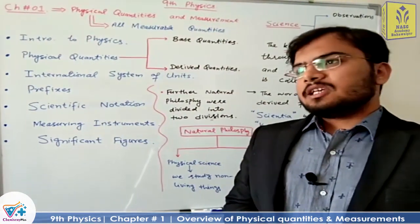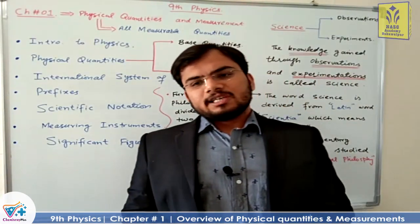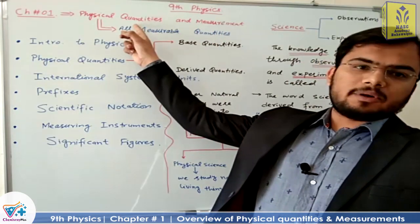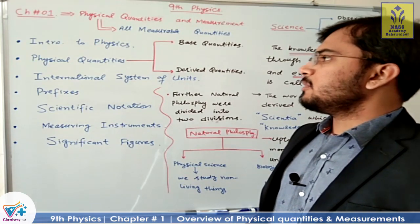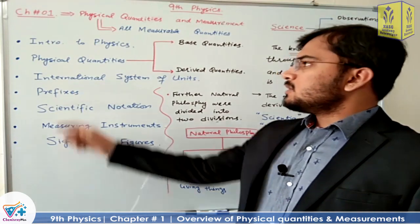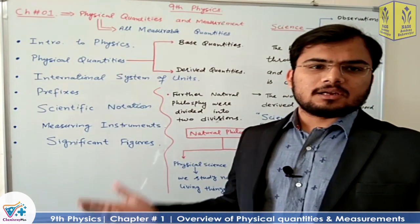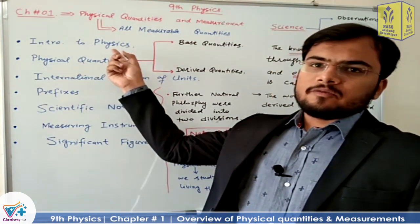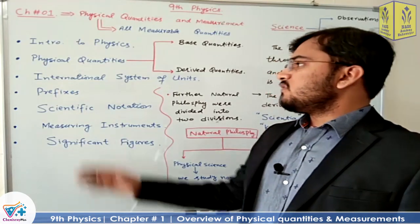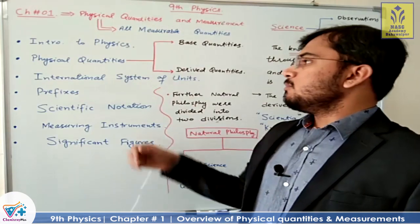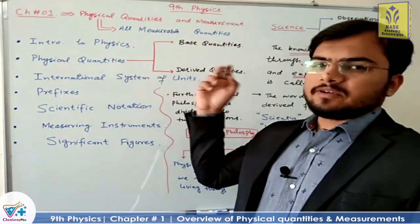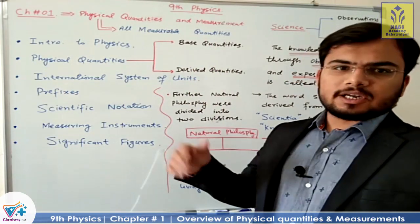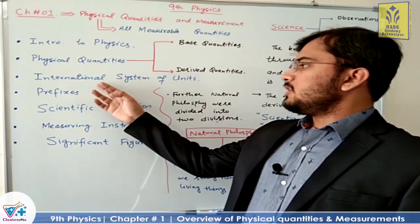At the end of this chapter, we will study measurements — things like measuring instruments, how they are used. That portion is basically practical-related; theory will be covered in the chapter. The main outlines of this chapter are: first, we will study the introduction to science — where did this knowledge come from. Second, we will study the introduction to physics — what exactly is physics. After that, physical quantities — I have briefly mentioned them. Physical quantities are divided into two categories: base quantities and derived quantities.